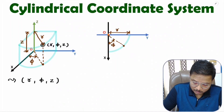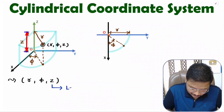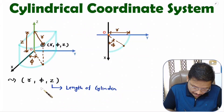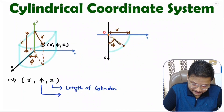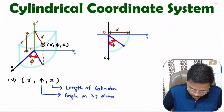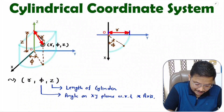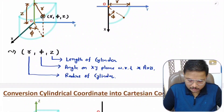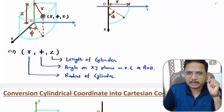Let me note down the meaning of these coordinates. z is the length of the cylinder. phi is the angle on the xy plane with respect to the x axis. And r is the radius of the cylinder. That is how cylindrical coordinates are defined.